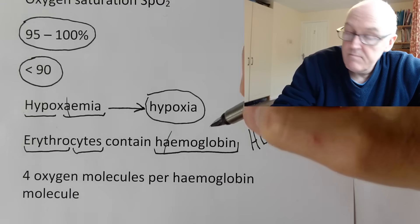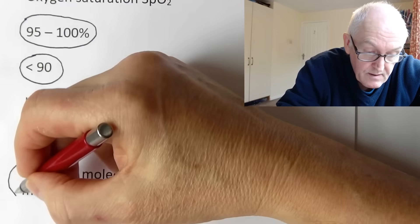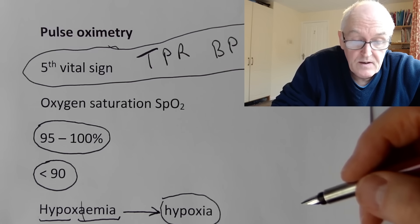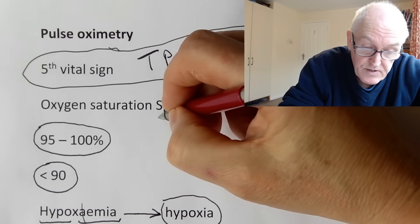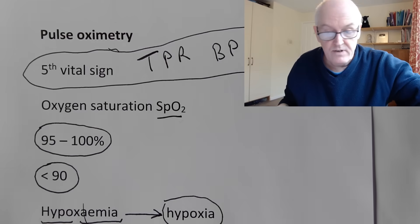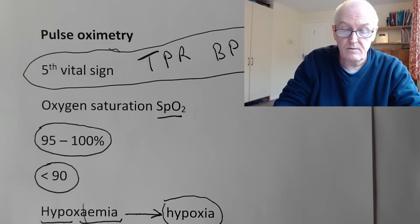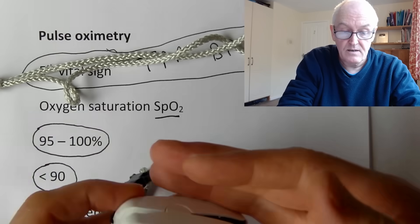It's the four oxygen molecules per hemoglobin molecule, the saturation of that, that's what you're measuring - oxygen saturation SpO2. There's absolutely no reason now with the current prices why you shouldn't have one of these at home. They're so cheap now, absolutely brilliant little things.